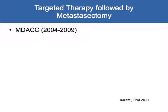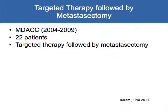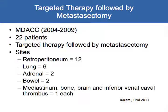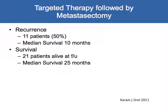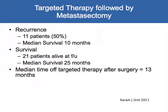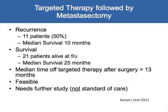Dr. Karam, who spoke earlier, asks what about in the era of targeted therapy — what if we do targeted therapy followed by metastasectomy? This more recent study, because targeted therapy became available in 2004–2005, evaluated 22 patients retrospectively. Targeted therapy was given, then the metastatic site was removed — retroperitoneum being the most common. 50% had a recurrence, with median survival of 10 months for those who recurred. At end of follow-up, 21 patients were still alive with median survival of 25 months for the entire group. The key point is that the median time off therapy — free of having to take a drug — was 13 months. His study shows this is feasible, but it needs further prospective study to show whether it's truly effective and how we can best benefit patients.